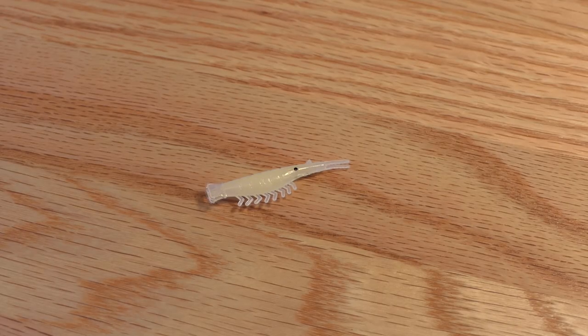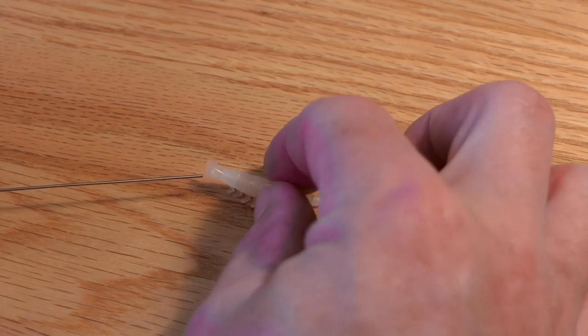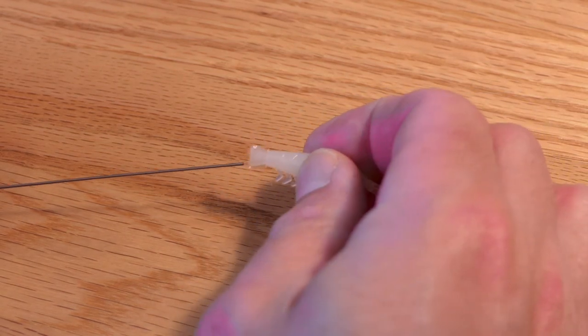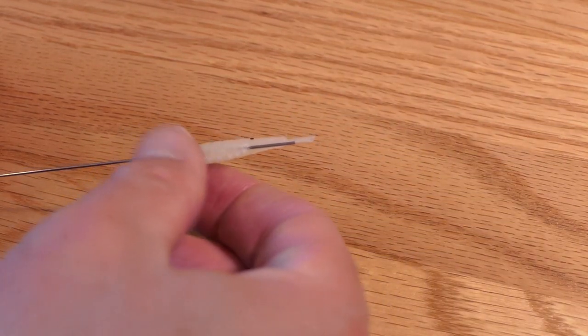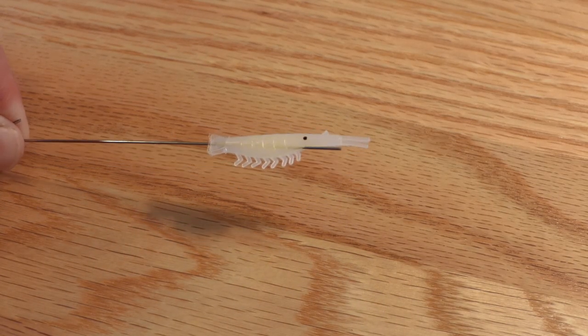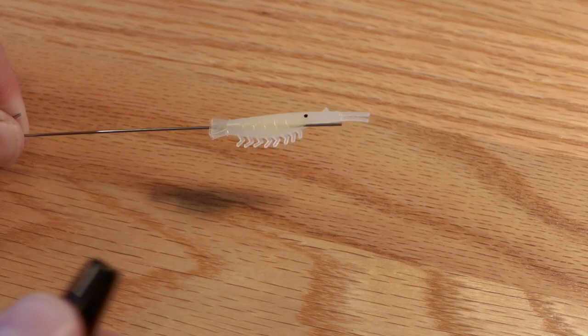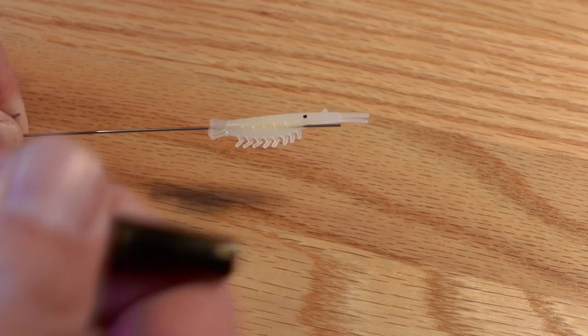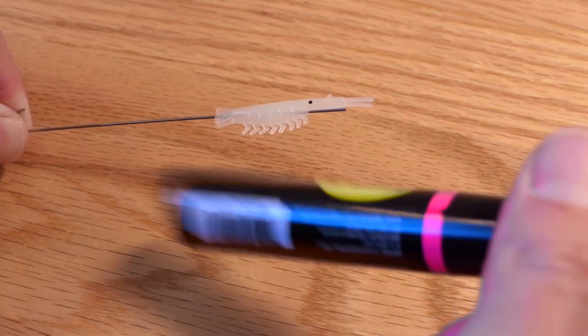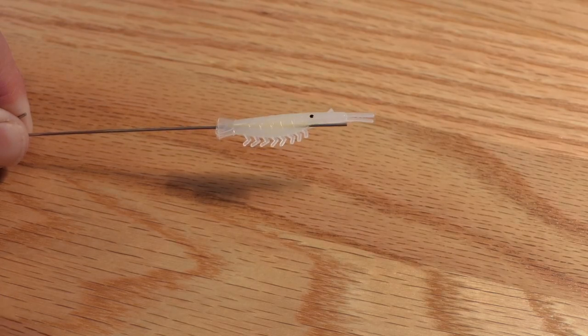So I'm going to show you how I paint these things using these Spike It unscented lure markers. To begin with, I either get a piece of wire, you can use something like a paper clip that you've straightened out, and I'll run that through there. That makes it easier for me to handle the shrimp. So then once I got it on there, I just take the marker, pop it off. You want to shake it a little bit. You'll feel it kind of rattling around there. It helps to get the dye flowing.